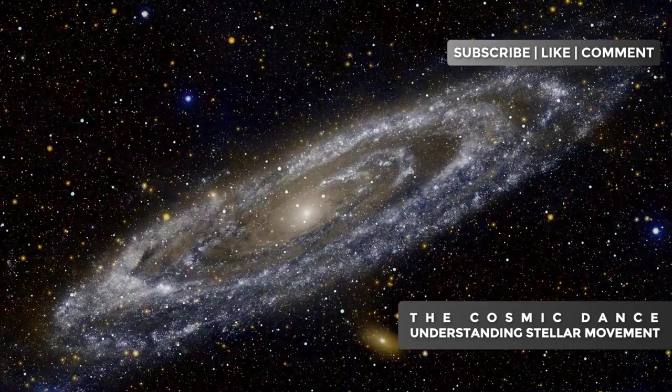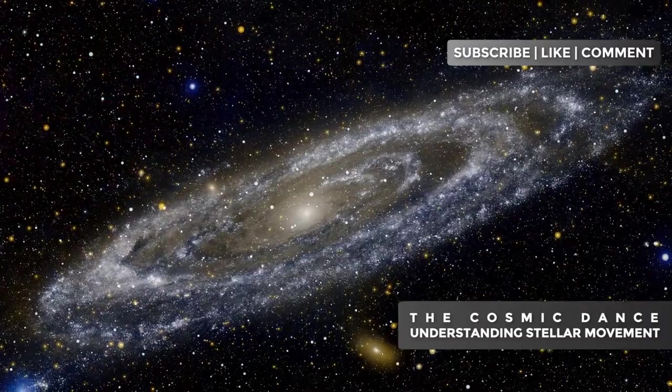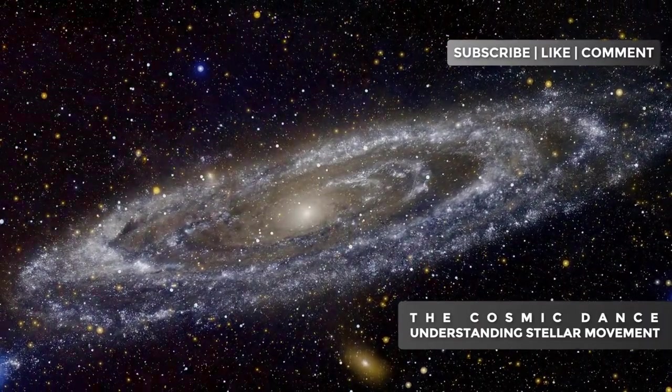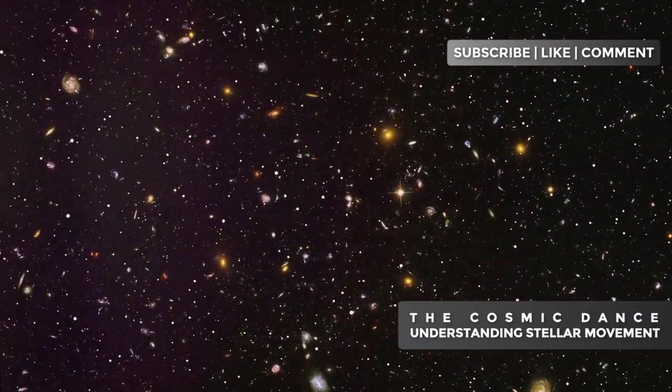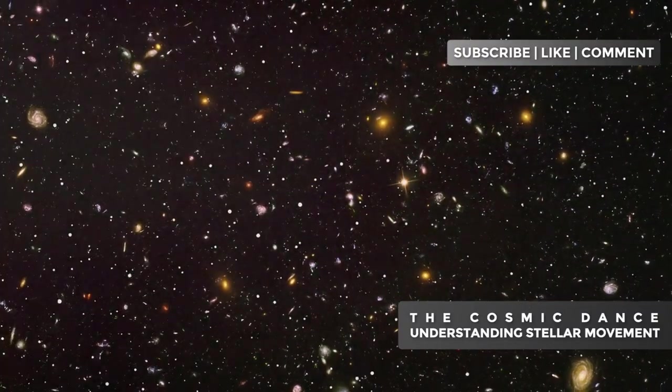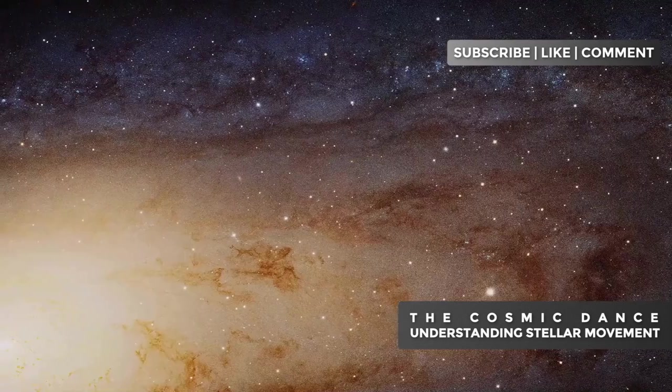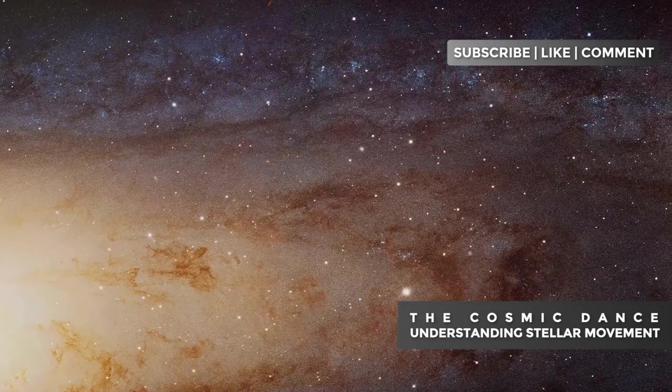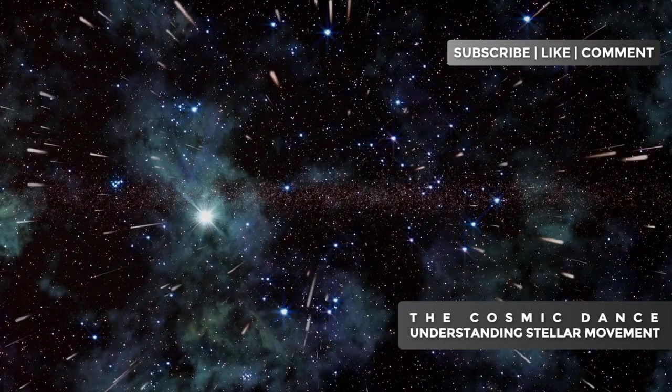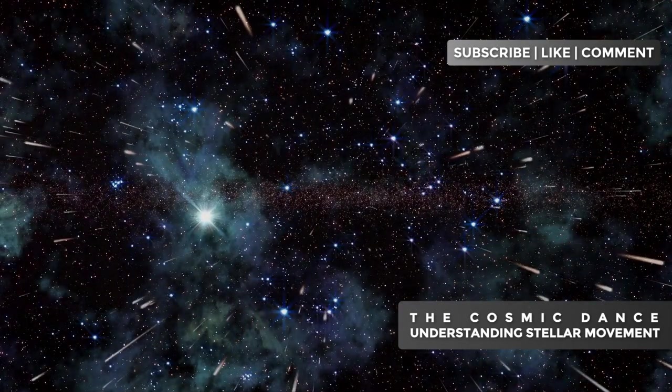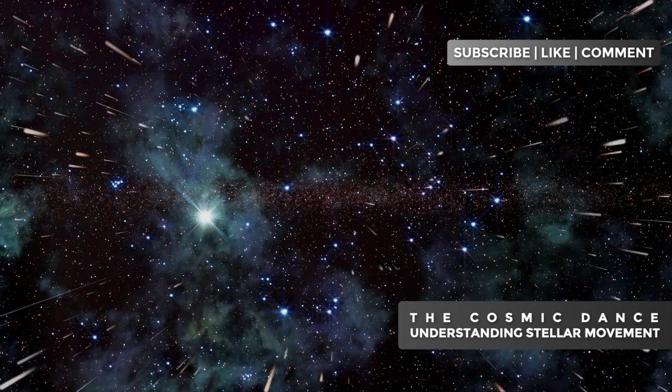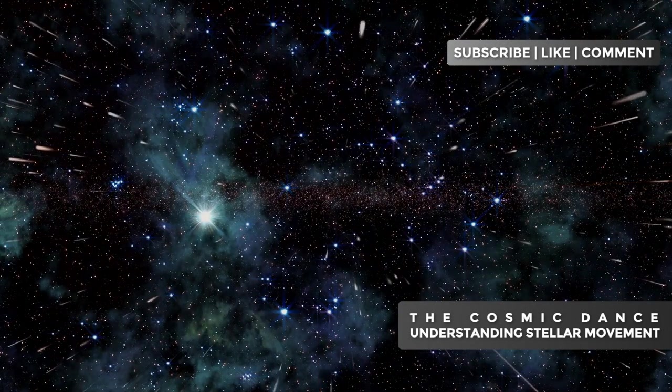The Milky Way is not isolated in the universe. It is part of the local group, a set of galaxies that includes Andromeda, our closest neighbor. Gravitational interactions with these neighboring galaxies have a significant impact on the movement of stars in our galaxy. For example, Andromeda's gravitational attraction is slowly pulling the Milky Way towards it, although the collision between the two galaxies will only occur about 4.5 billion years from now. This influence is already subtly affecting the orbits of stars in both galaxies.